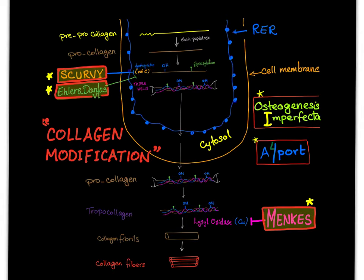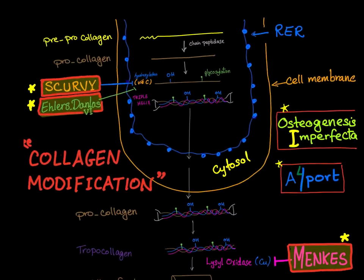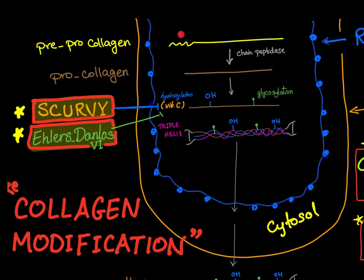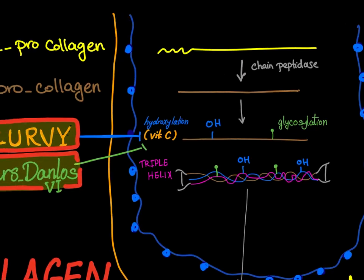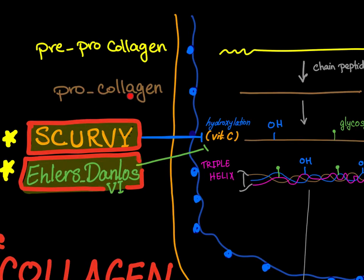Hi, this is Medicosis Perfectionalis. Let's review collagen modification — this is crucial. Collagen starts as an alpha chain called pre-pro collagen. It contains a hydrophobic signal sequence, which is cut off by an enzyme called signal peptidase, producing what is known as pro-collagen.